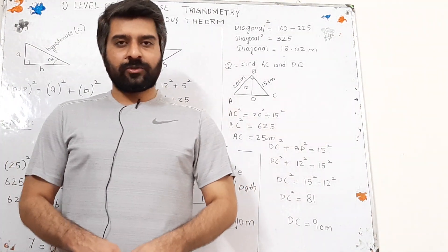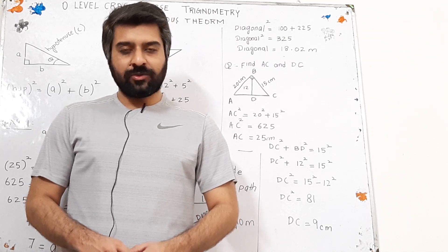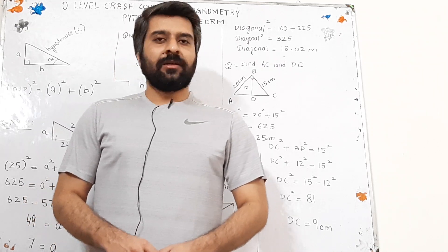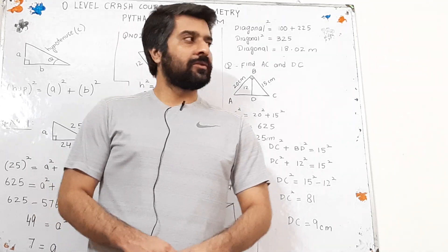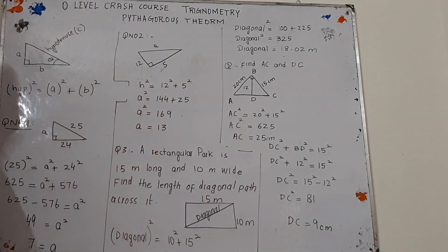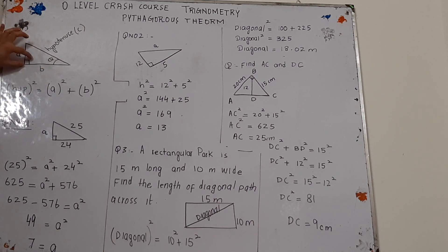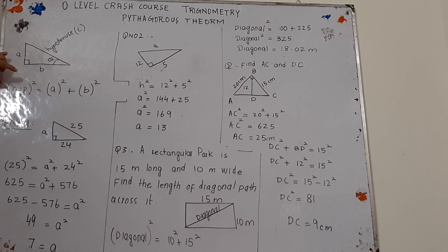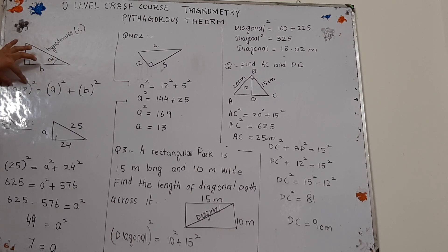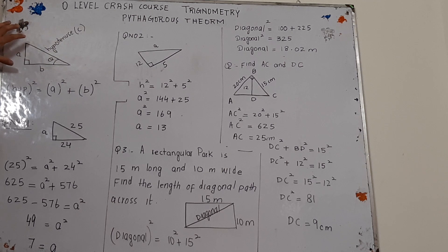Today we are going to discuss Pythagorean theorem. Pythagorean theorem is used to solve right angle triangles. This is a continuity of the four levels crash course. So what is the Pythagorean theorem? If this is a right angle triangle and this angle is 90 degrees, then the side opposite to the 90 degree angle is known as the hypotenuse, and Pythagorean theorem says that the square of the hypotenuse equals the sum of the squares of the other two sides in a right angle triangle.